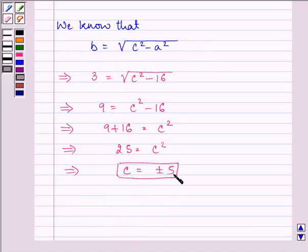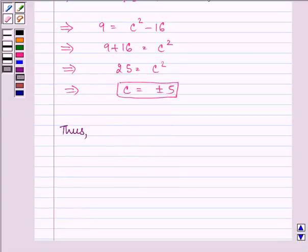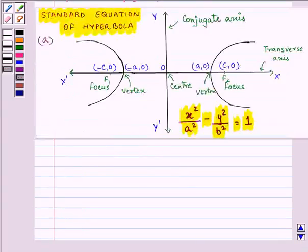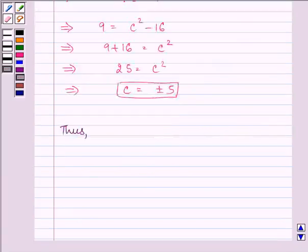Now, since we know the value of a, b and c, thus we can see that, we know that foci is plus minus c, 0. So, we have its value is equal to plus minus 5, 0. Since c is plus minus 5, 0.